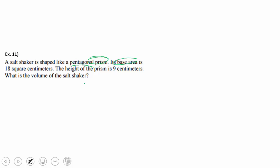So I know it has a base area. Volume equals area of the base times the height. The height is 9. Area of the base is 18. And 18 times 9 is 162. 162 cubic centimeters of salt can fit inside that salt shaker. There you go. That's what we got.